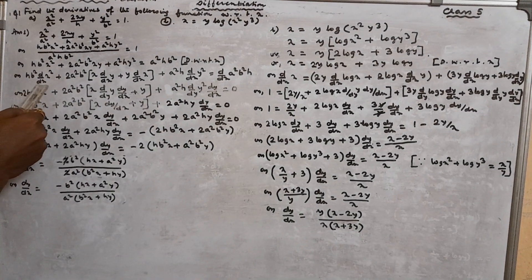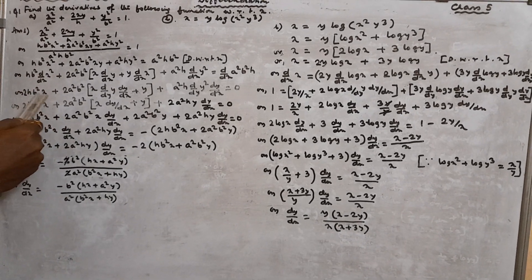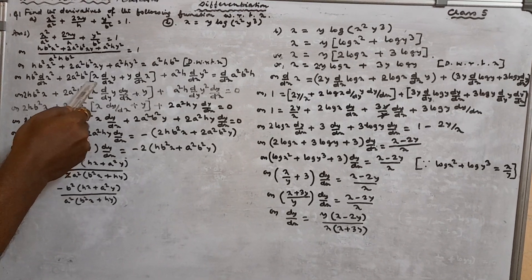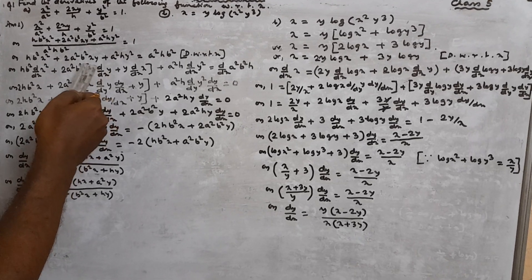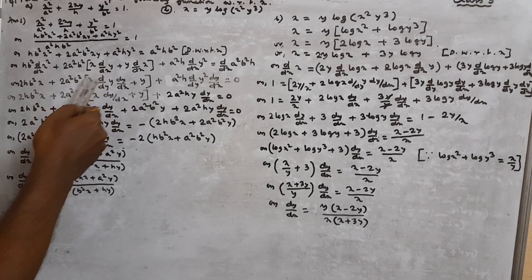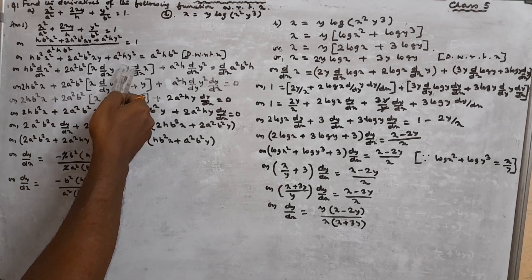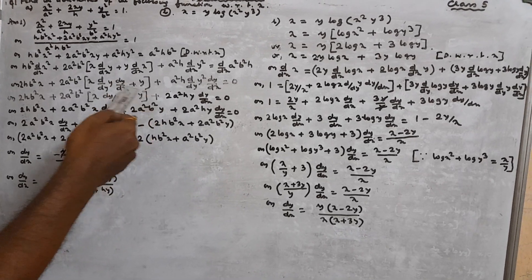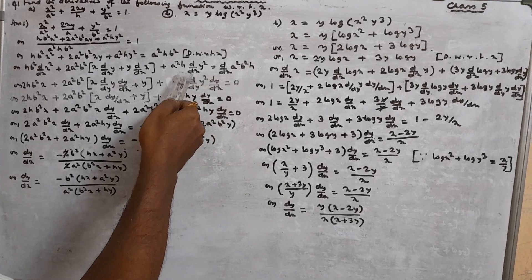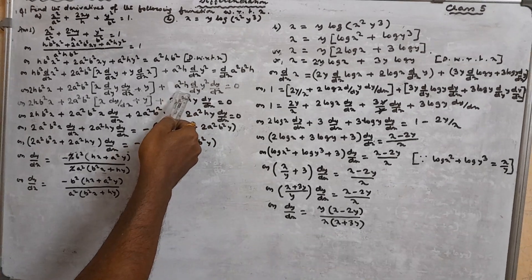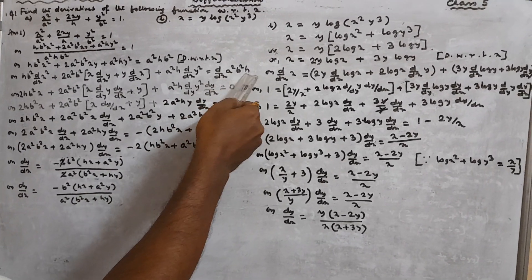Now applying differentiation: d/dx of X² gives 2X, so HB²·2X plus 2A²B². For XY as a product: X · d/dx of Y — since Y cannot be differentiated with respect to X directly, we write (dY/dX) — plus Y · d/dx of X which is 1. Plus A²H · d/dx of Y² — since Y² cannot be differentiated directly, we write (d/dy of Y²)·(dY/dX). The right side differentiates to 0.